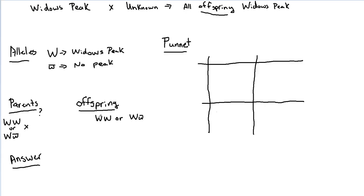What jumps out right away: if all offspring are WW, then one of the parents could indeed just be WW. If these two homozygous dominant parents mated, all their kids are always going to have the dominant trait. That's one possible answer — we don't even need a Punnett square for that.